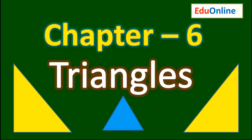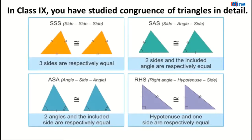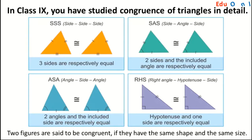This is an important topic for class 10th. In class 9th, you have studied congruence of triangles in detail. Two figures are said to be congruent if they have the same shape and the same size. In other words, two figures are congruent when they completely overlap.